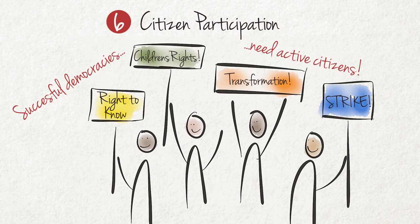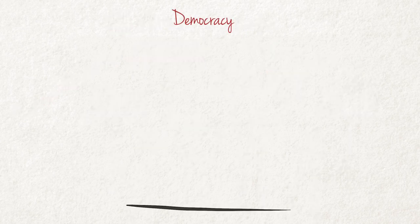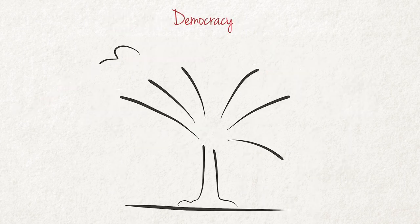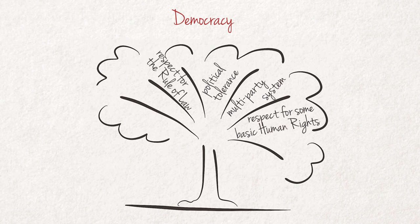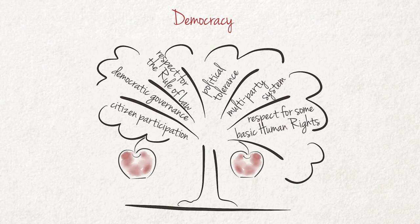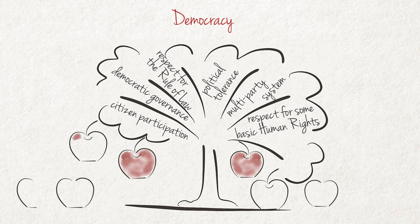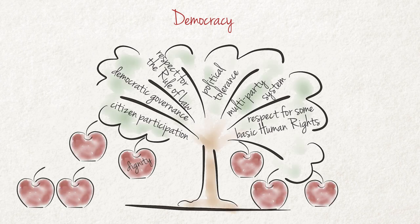All of us can help to shape a successful democracy. When these six main features are present, it indicates a strong democracy. Through the application and upholding of these features, well-functioning democracies are likely to provide the following fruits of democracy: respect for human dignity, freedom, equality, justice, good governance, peace, and the opportunity to hold elected representatives accountable.